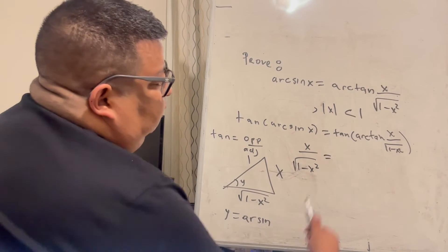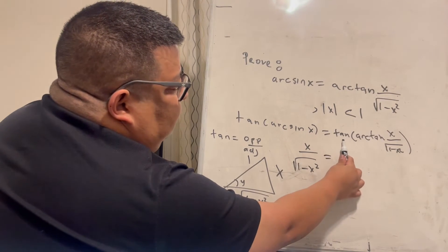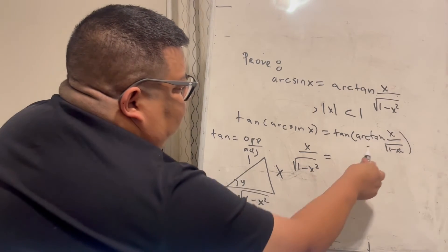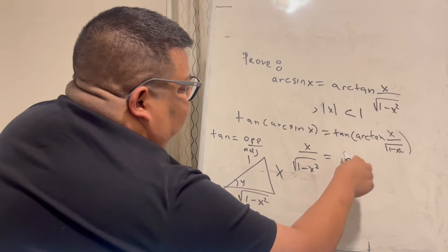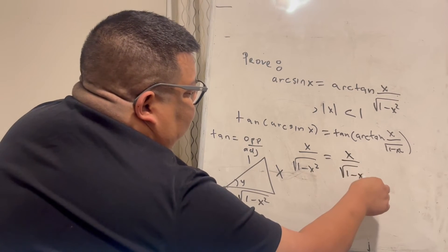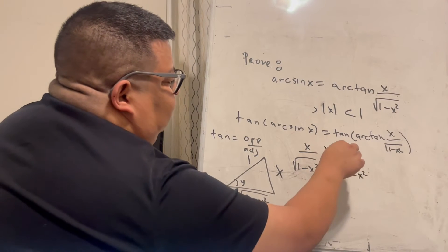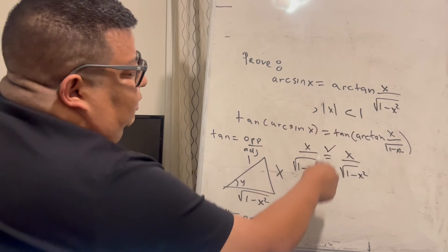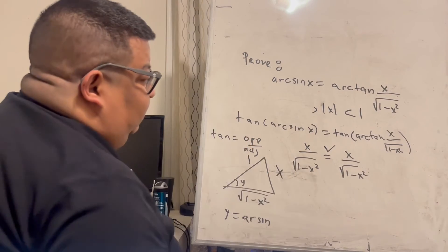And that is equal to, notice if we take the tangent of the arctan, I just get whatever is inside here. So that's equal to x over square root of 1 minus x squared, and I do get an equality, so that checks out. So this equality checks out.